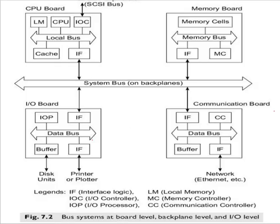The first type is the hierarchical bus system, which consists of a hierarchy of buses connecting various systems and components in a computer. Different buses perform different interconnections. The local bus is implemented within a processor chip or on a printed circuit board. The memory bus connects memory with interface logic. The data bus is used by the IO network interface chip or board.